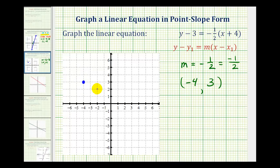So we'll go down one, right two. And we can do this several times if we want. Down one, right two, down one, right two, and so on. So our line passes through these points and will look something like this.